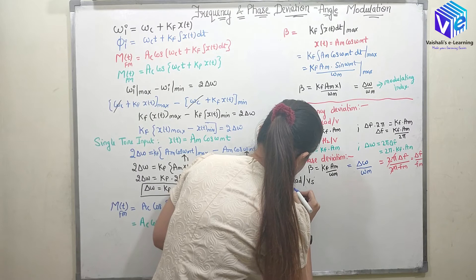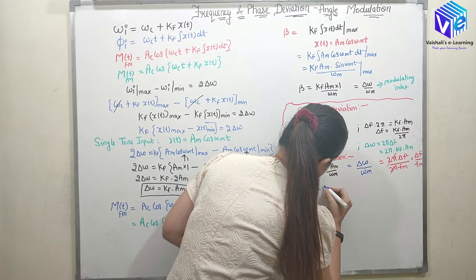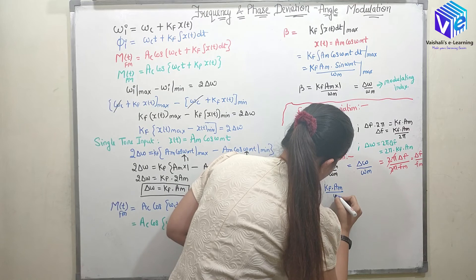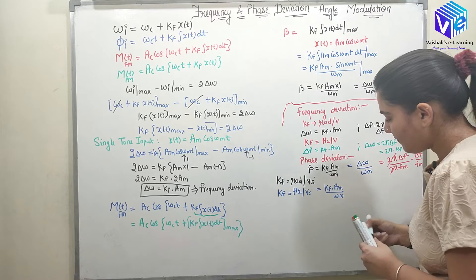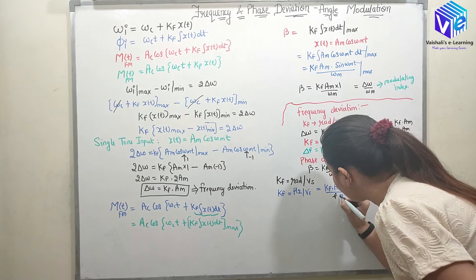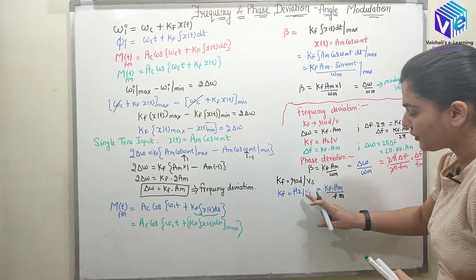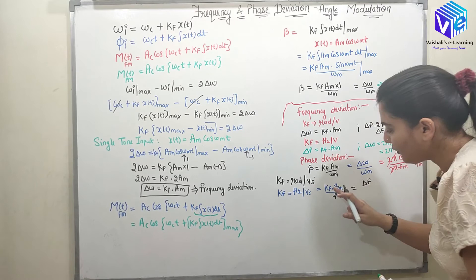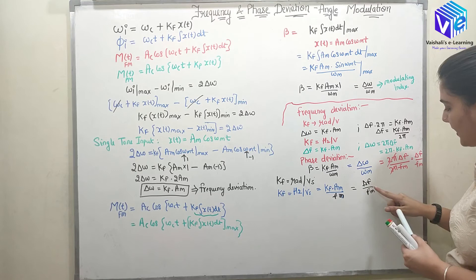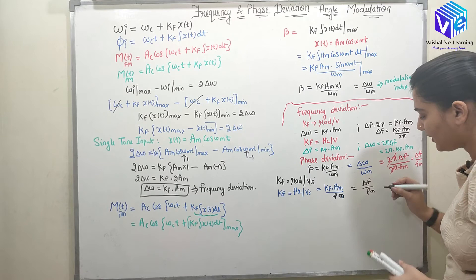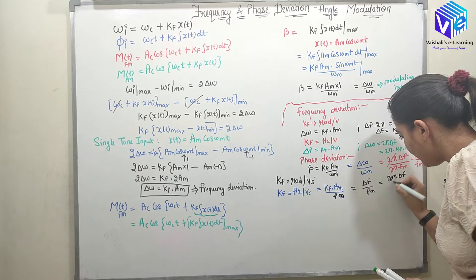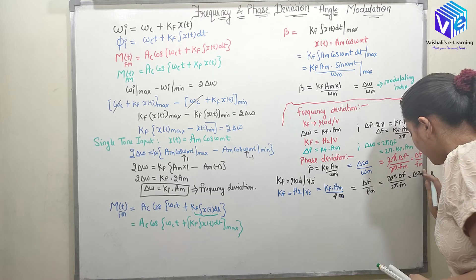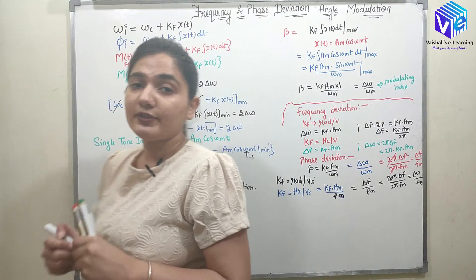Similarly, if k_f is given in hertz per volt per second, then k_f * A_m gives delta_f (not delta_omega), and beta = k_f * A_m / f_m = delta_f / f_m. Multiplying numerator and denominator by 2*pi gives delta_omega / omega_m. So in all cases beta = delta_f / f_m = delta_omega / omega_m.